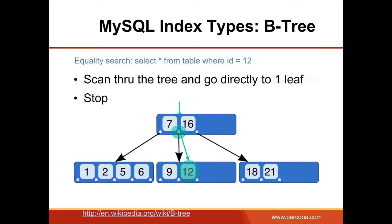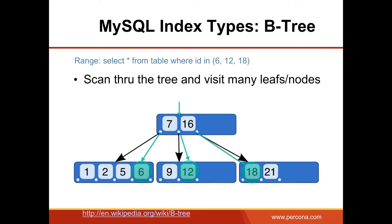Another possibility is that we have multiple IDs — what I will call a range in later slides. In this case, if we have ID IN (6, 12, 8), MySQL will need to scan through the tree and visit a number of leaf nodes. Depending on how many leaves and nodes it needs to visit, it may take longer.